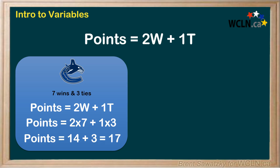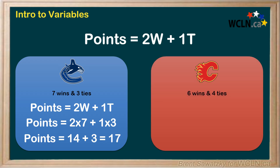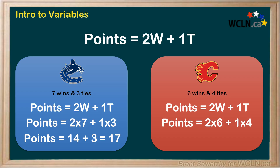The Calgary Flames, at this point in the year, have six wins and four ties. For them, W equals six and T equals four. Plugging those into the same equation, they would get 12 plus four, or 16 points. So the same equation was used by each team, but their wins and ties varied. Therefore, with the different values for these variables, the points were different — the Canucks have 17 points while the Flames have 16 points.